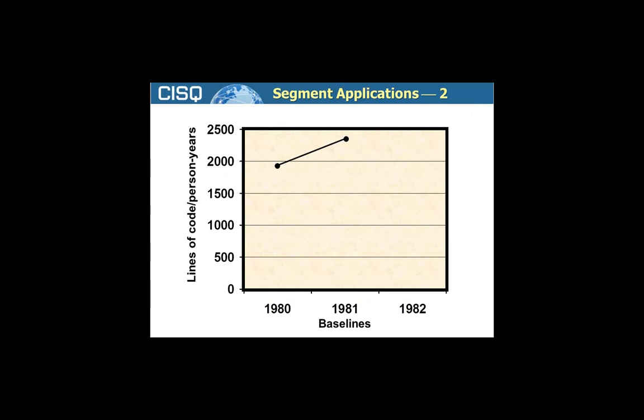We had a baseline in 1980 of around 1,800 to 1,900 lines of code. Our 1981 baseline was somewhere between 2,300 and 2,400 lines of code, so we showed a nice improvement. Now, there were all kinds of games we had to play in how things got laid into 1980 versus 1981 — for instance, if a project was completed on December 31st, which bucket did it go into versus January 1st? Even though they were both done at the same time, it's just one day difference in when the release was accounted. But we made sense out of it and showed a 20-some-odd percent improvement in productivity.